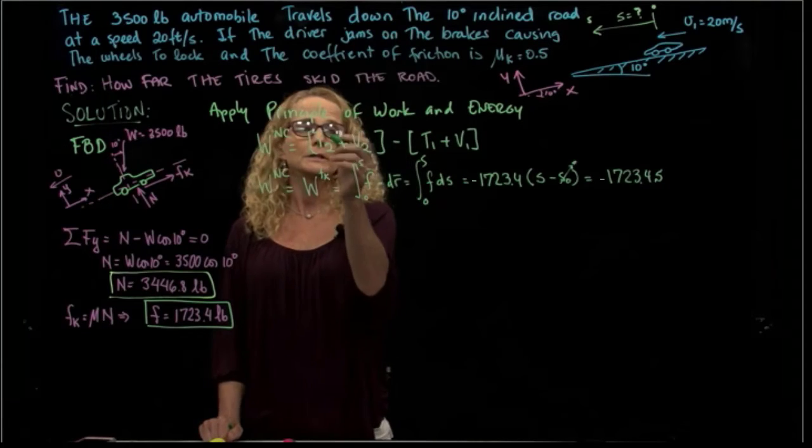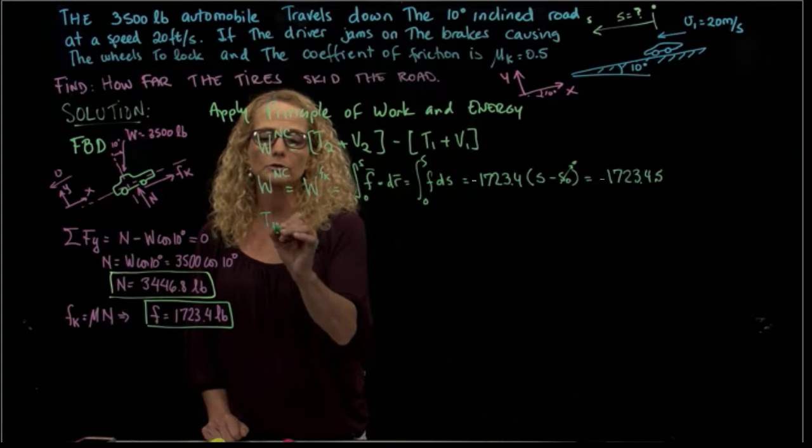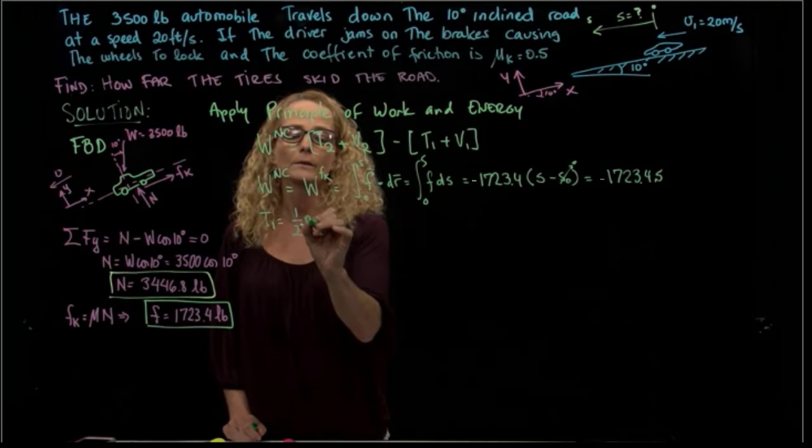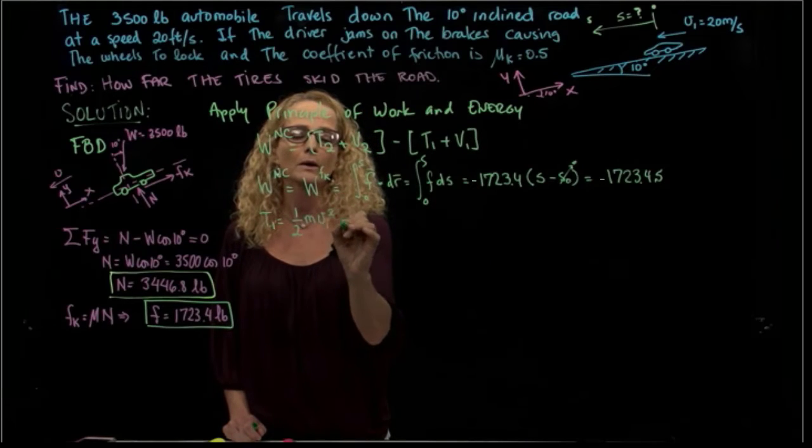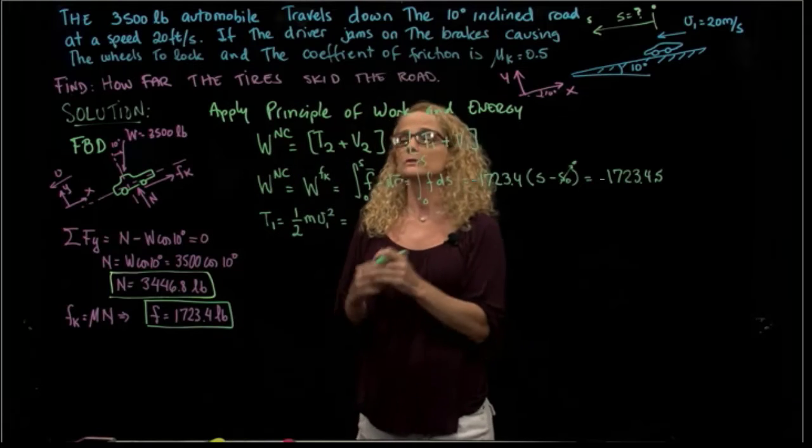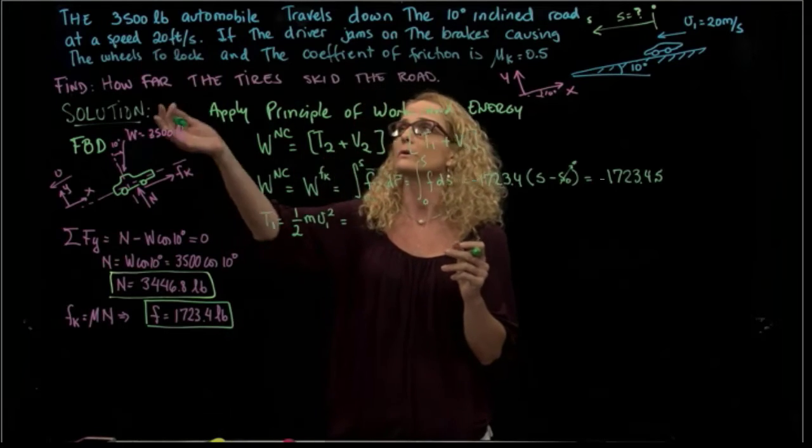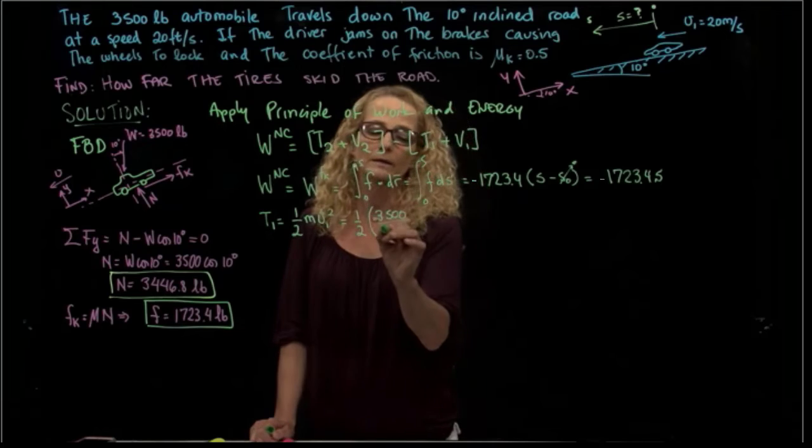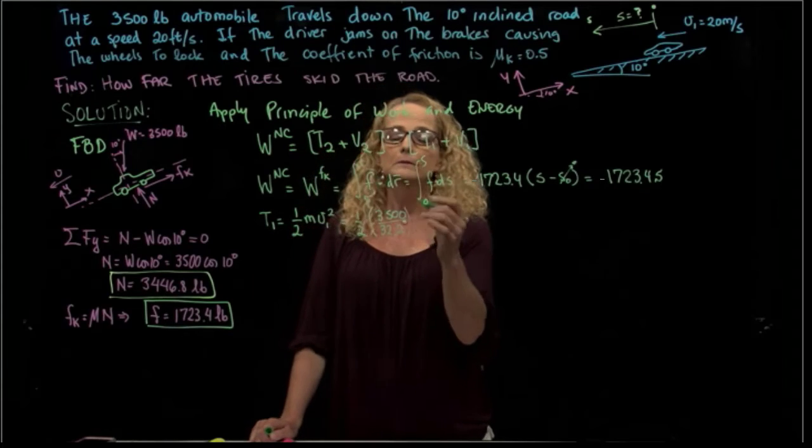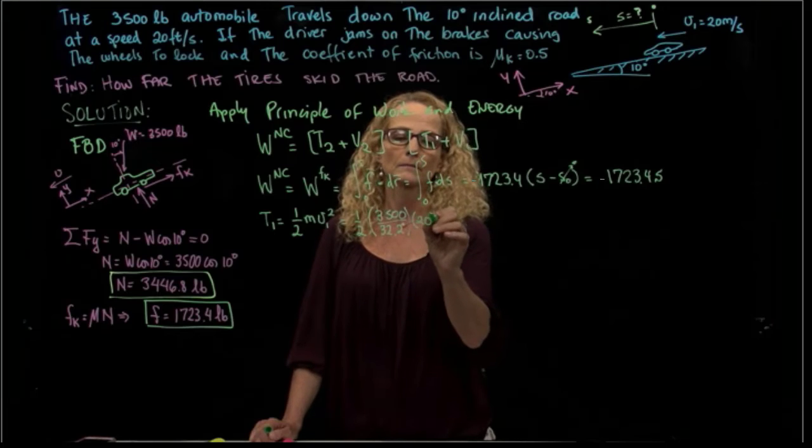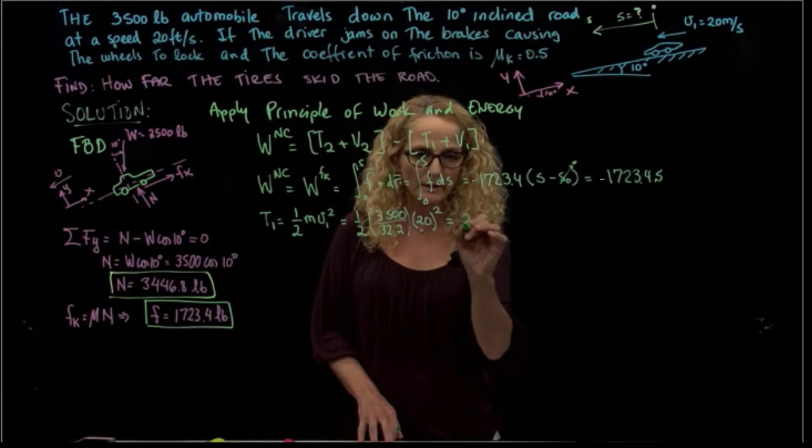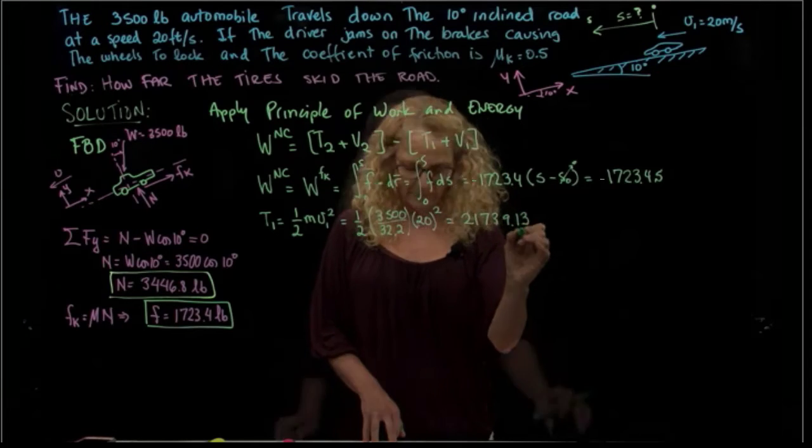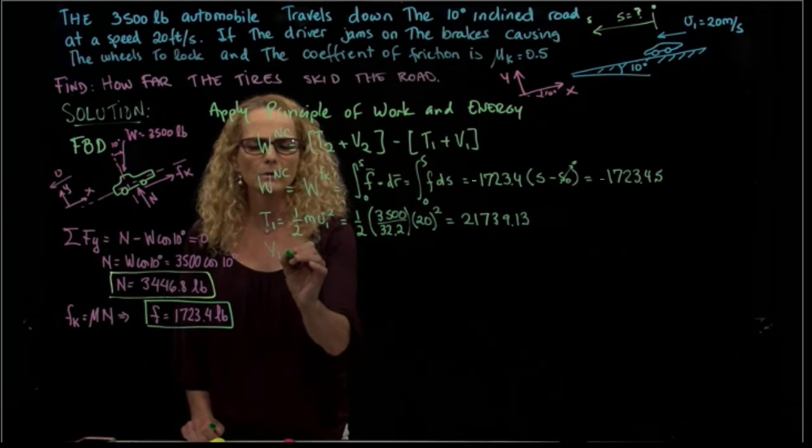Then we have the kinetic energy. Let's do the kinetic energy of the first position. We know that the initial velocity is 20, so we have one half of the mass times velocity 1 squared. Remember that in US units of American units, the pound is a primary unit and the mass is a derived unit, so we have to divide 3,500 by the gravity, times the velocity squared. I have already calculated that value, it's 21,739.30.